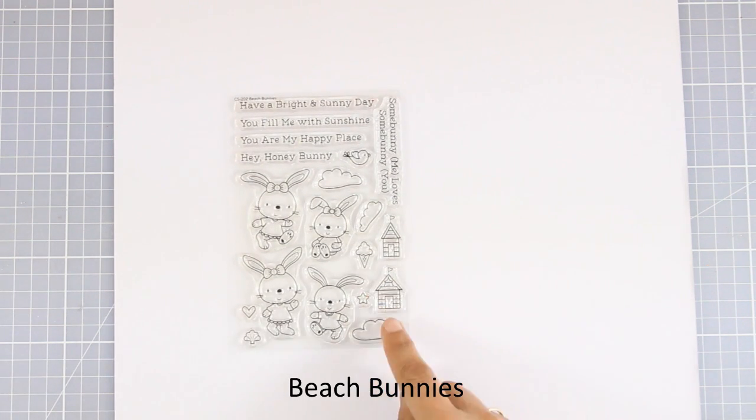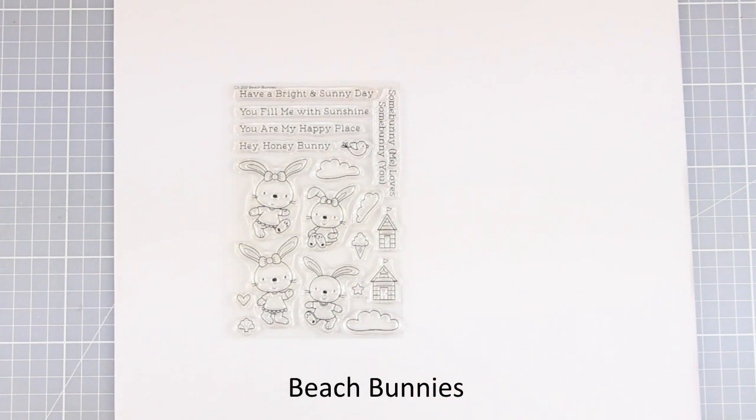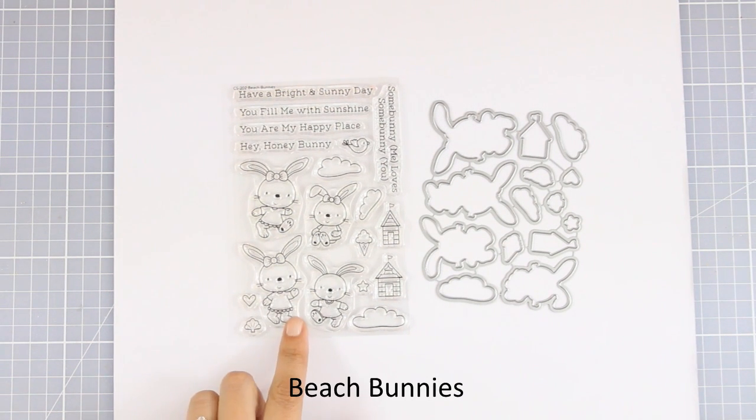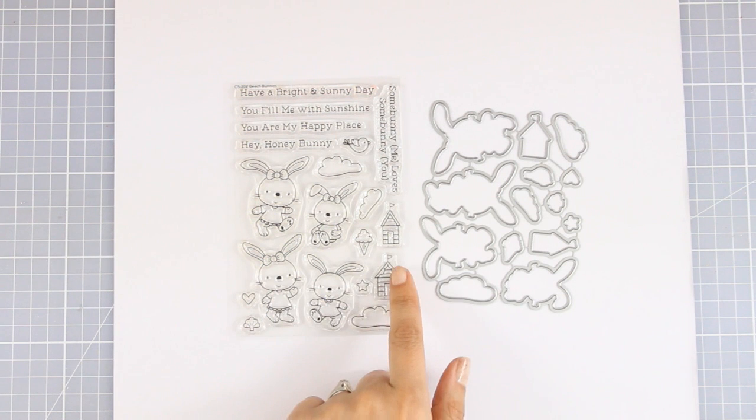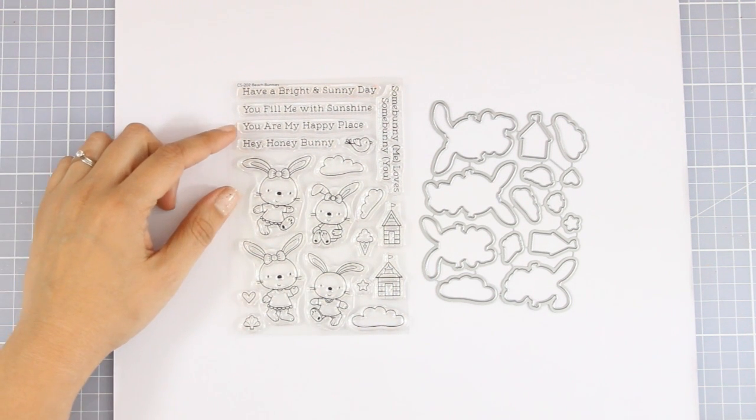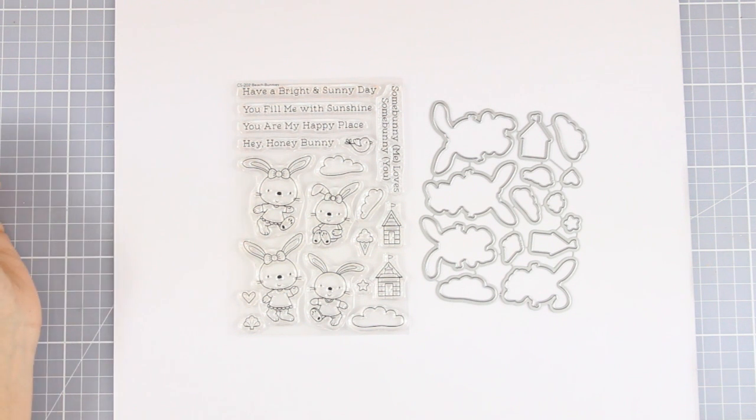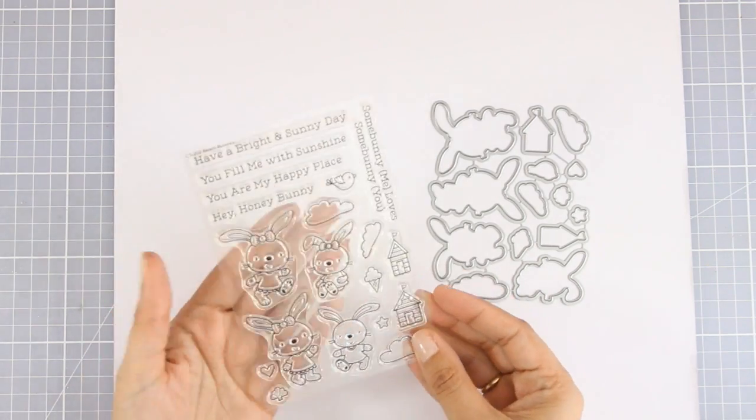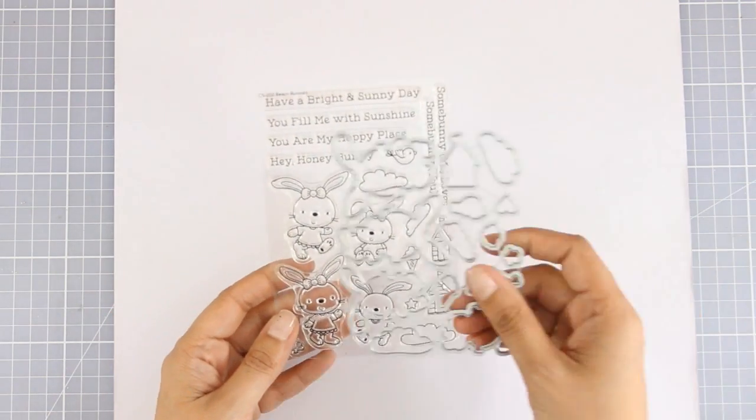And now let's move on to the next 4x6 stamp set. This is called Beach Bunnies. It comes with four adorable bunnies and I don't know if it gets more adorable than that. There are also matching dies and you can see little images such as small houses, clouds, a birdie, and an ice cream to create your little scenes. There are also lovely sentiments such as 'Have a bright and sunny day,' 'Hey honey bunny,' and 'Super cute.' Guaranteed to bring a smile to every little boy or girl.